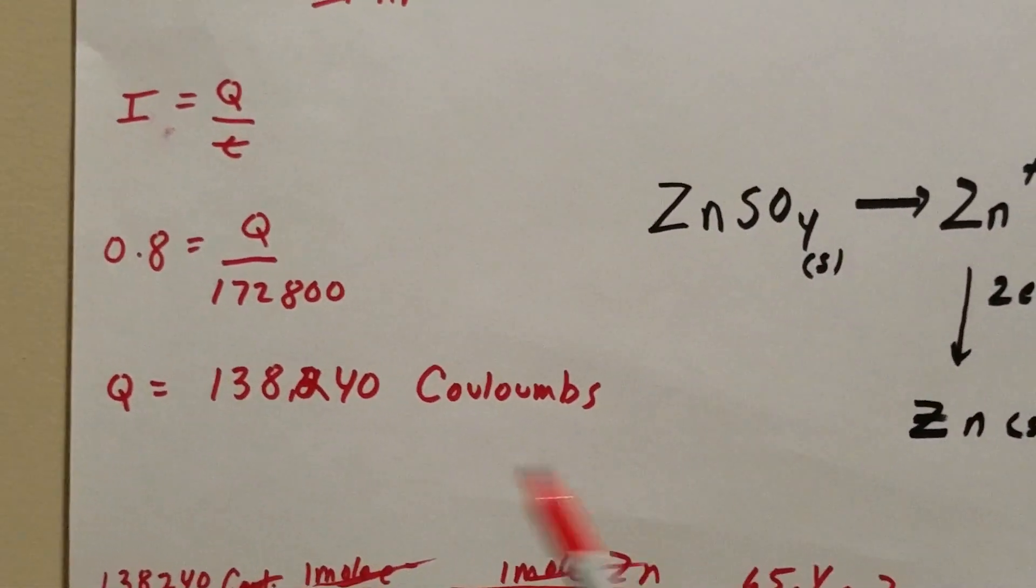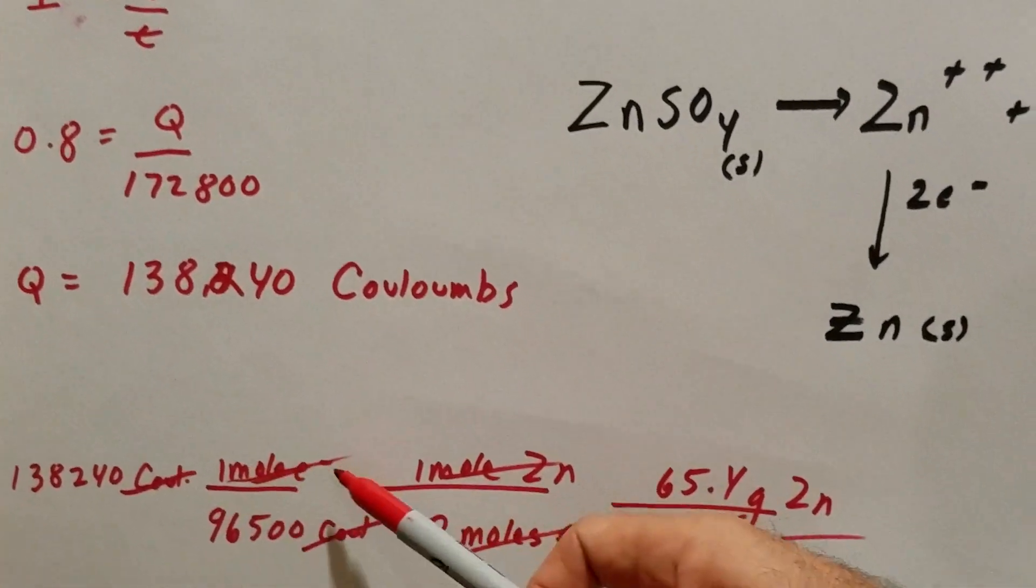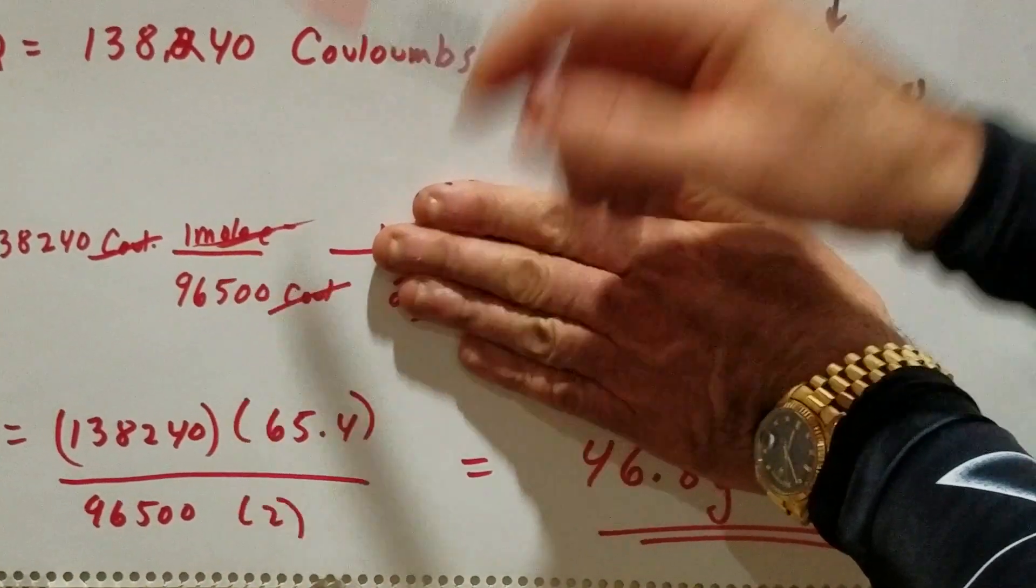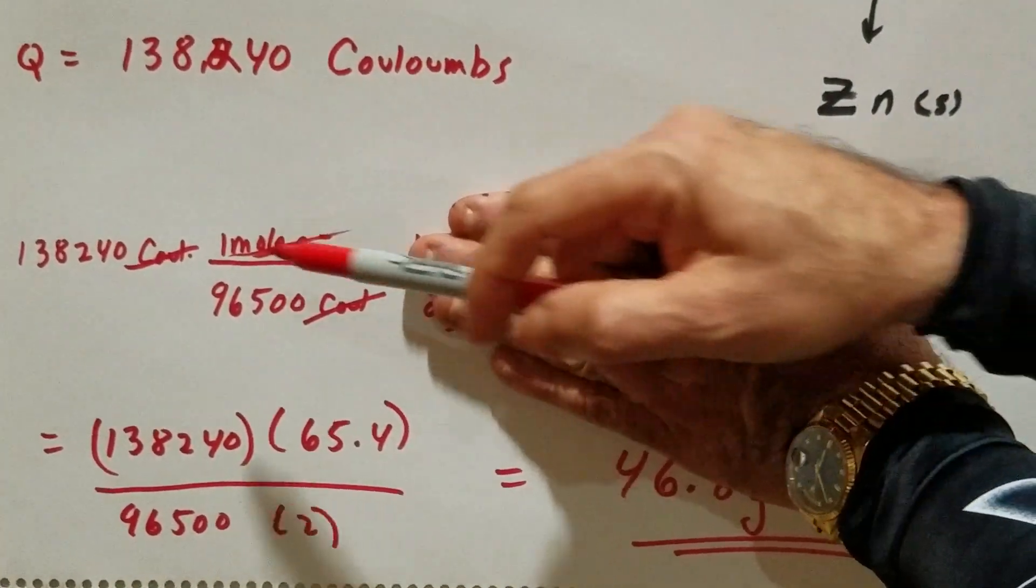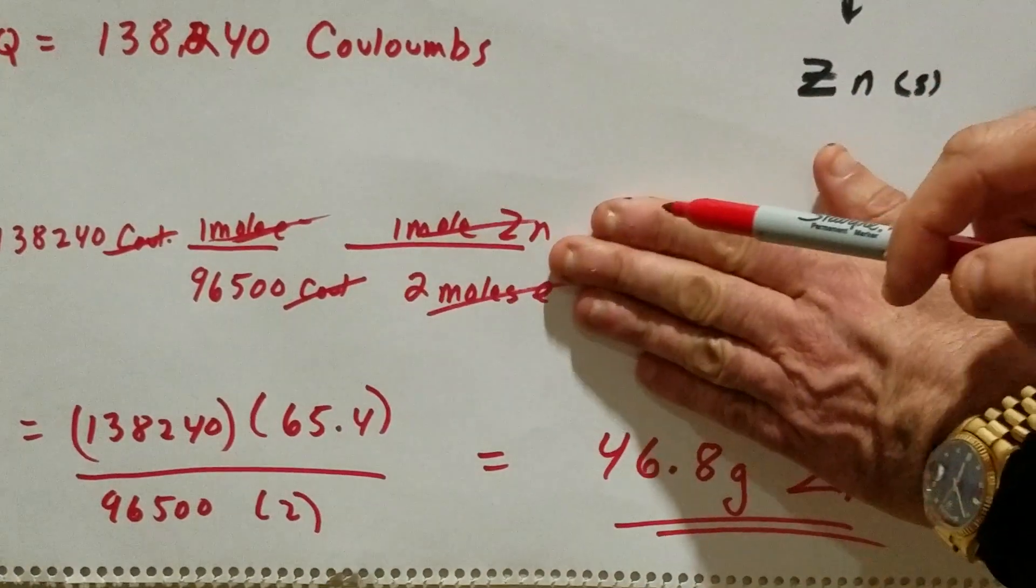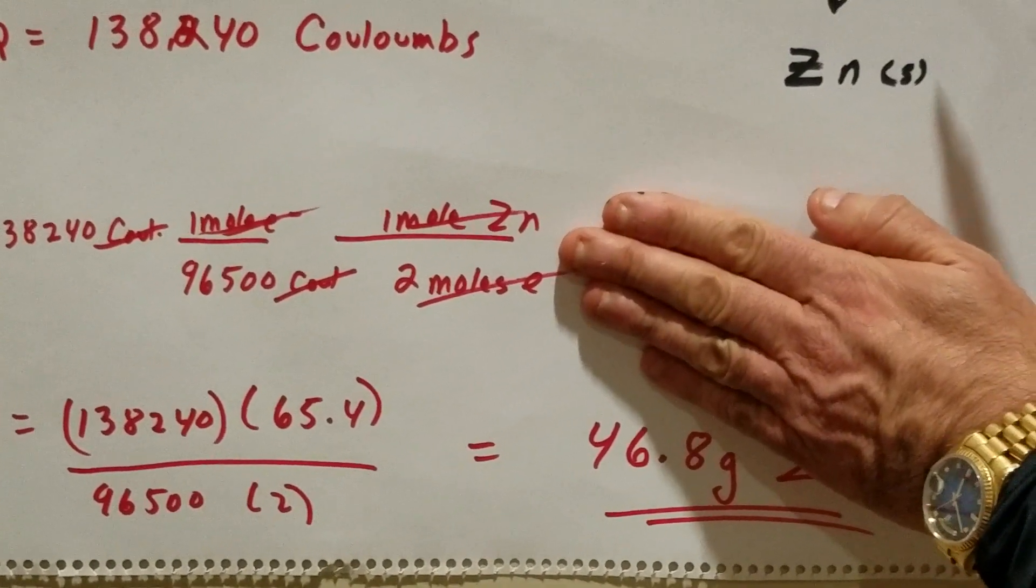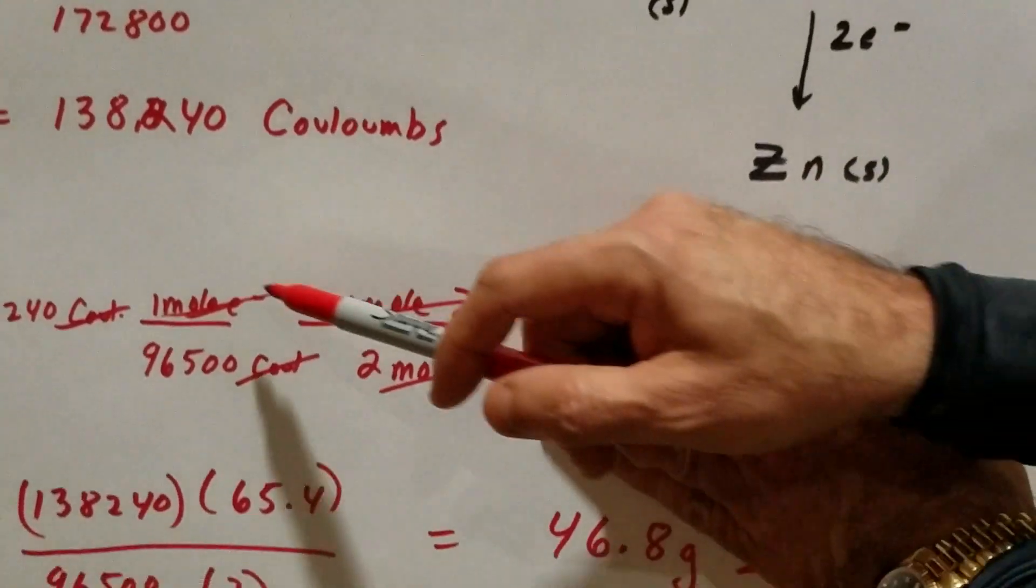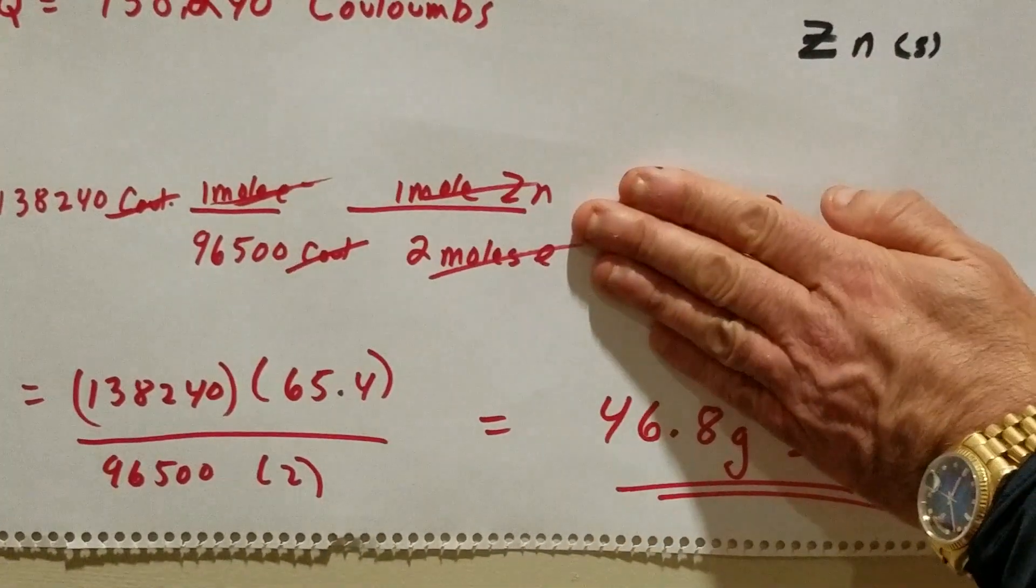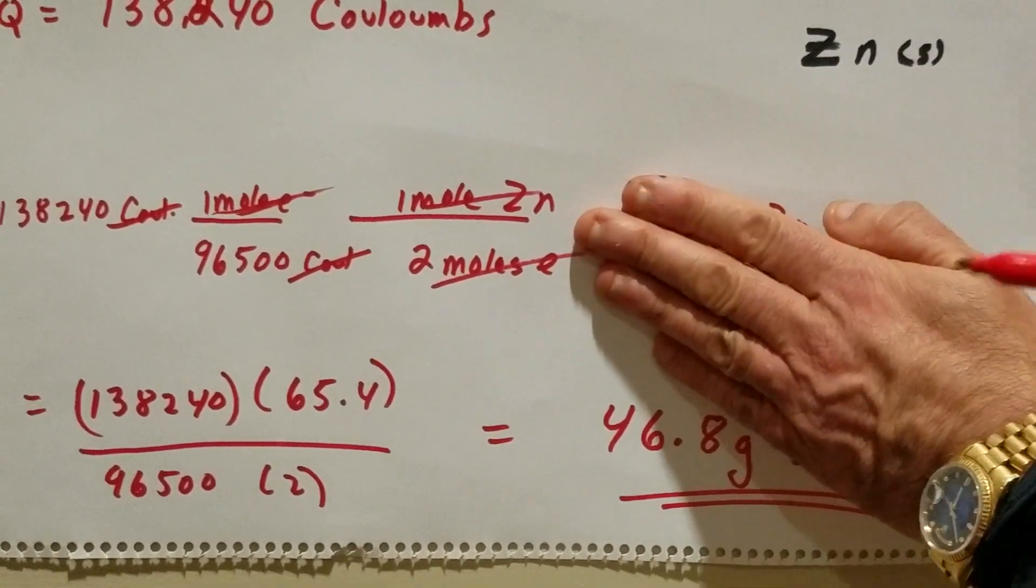You take the 138,240 coulombs, and we have one mole of electrons. If you cover this up for a second, it's easier. One mole of electrons is 96,500 coulombs. Coulombs cancel out. We're left with moles of electrons in the numerator. Then I move over one more. There's two moles of electrons for every mole of zinc made. So if you use that conversion factor, you cross out the moles of electrons, and you're left with moles of zinc.